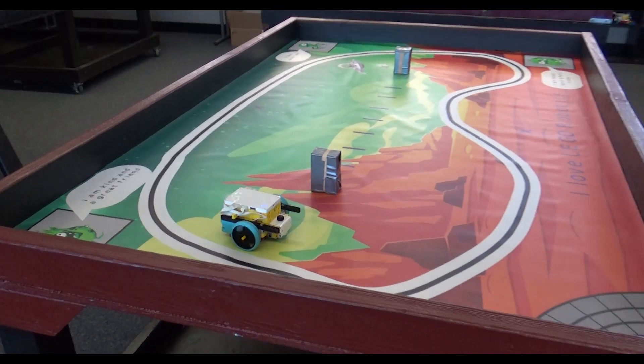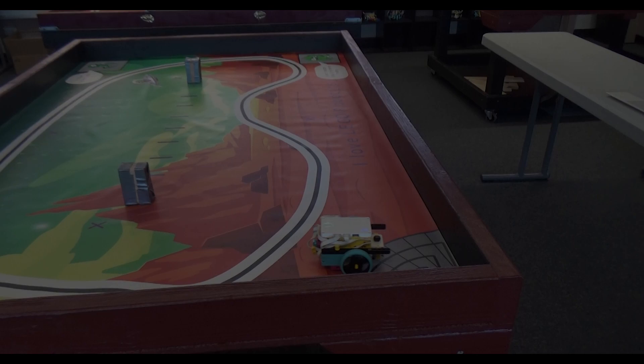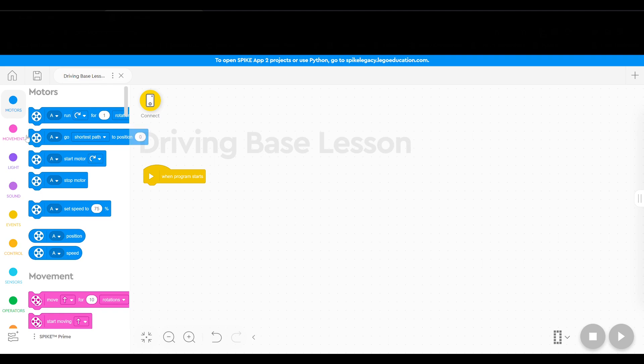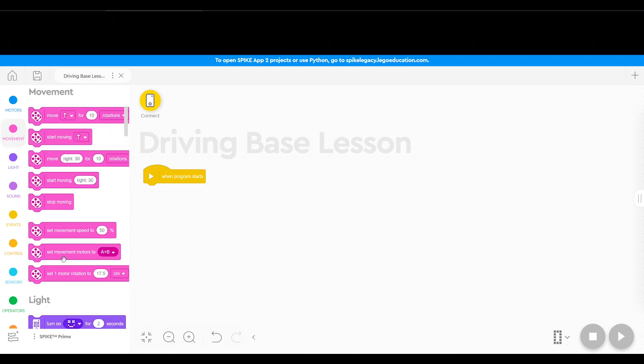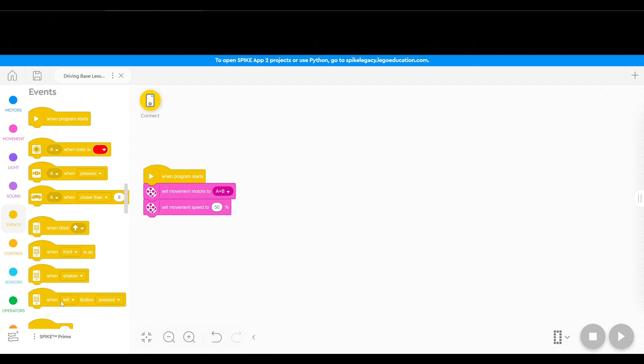The program for the driving base is basically the same as the hopper. Under one program starts, they still need to always set up their movement motors and movement speed, and I keep emphasizing the importance of this just being the habit that they always do first. Then again I have them go to events and bring in a when left button is pressed event.